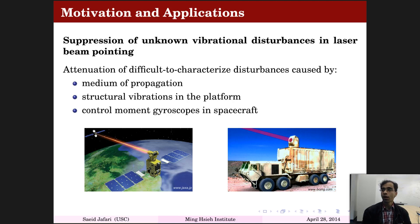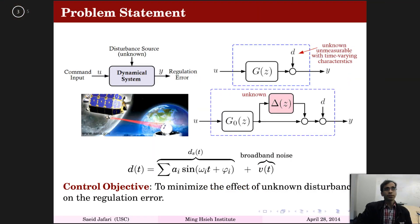One application is in laser beam pointing in high-performance laser-based systems where precise pointing is required. Suppression of disturbances caused by internal or external sources is necessary. The source of disturbance can be the medium of propagation, flexibility of the platform, or internal components such as control moment gyroscopes in a satellite.